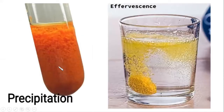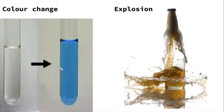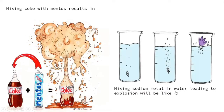To understand chemical incompatibility, here is a simple example: the Mentos and Coke experiment. When you add Mentos to Coke, this results in an explosion due to the release of carbon dioxide. Since there is an explosion taking place, we can conclude that this is an example of chemical incompatibility.